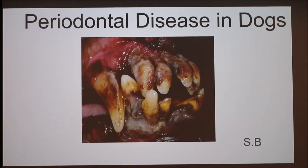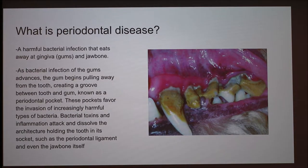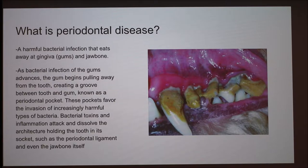Today I'll be talking about periodontal disease in dogs, most commonly called gum disease. It's a harmful bacterial infection that eats away at the gums and the jaw bone. As the bacterial infection of the gum advances, the gum will begin to pull away from the tooth, creating a groove between the tooth and the gum known as the periodontal pocket.